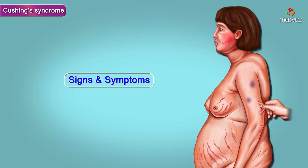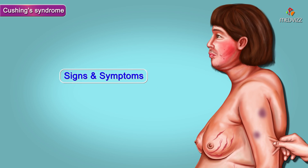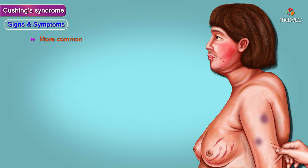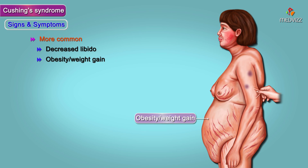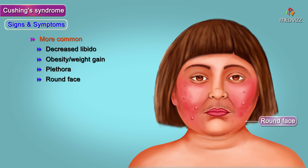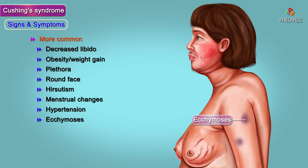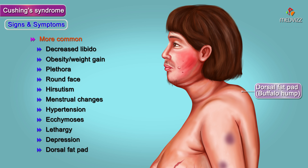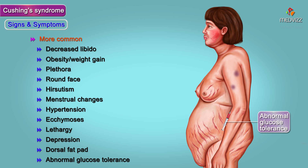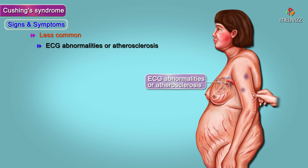Signs and symptoms. The more common signs and symptoms of Cushing's syndrome are: decreased libido, obesity or weight gain, plethora, round face, hirsutism, menstrual changes, hypertension, ecchymosis, lethargy or depression, dorsal fat pad, and abnormal glucose tolerance.